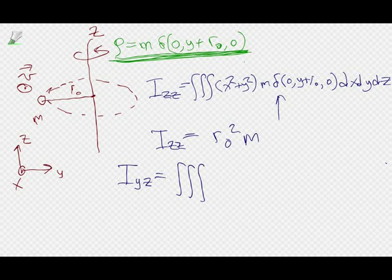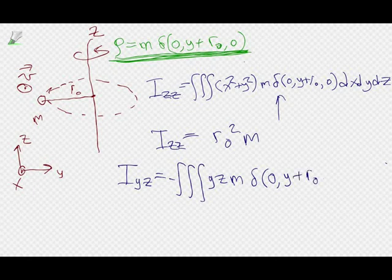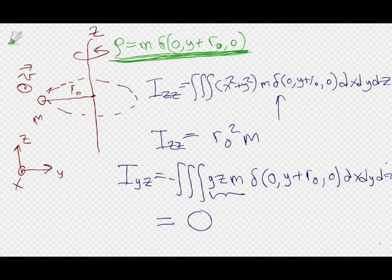Let's do I_yz using this delta function. I_yz equals the integral of minus yz times m delta(0, y + r_0, z − 0) dx dy dz. The delta function plucks out y = −r_0 and z = 0, giving minus times (−r_0) times 0 times m — wait, let me restate: it gives m r_0 z_0. So I_yz is not equal to zero in general.